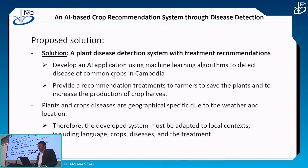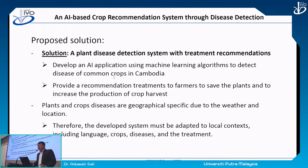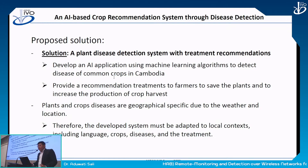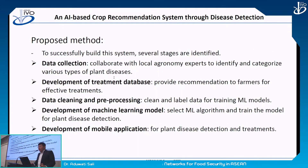Therefore, we propose building a plant disease detection system with treatment recommendations for farmers. We have two main goals: first, to develop an AI application using machine learning algorithms to detect disease of common crops in Cambodia; and second, to provide treatment recommendations to farmers so they can use the solution to save their plants and increase crop production. Plants and crop diseases are geographically specific due to weather and location, so the developed system must be adapted to the local context including the language, crops, disease types, and treatment methods.